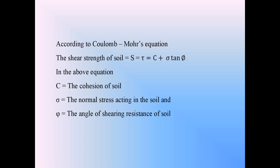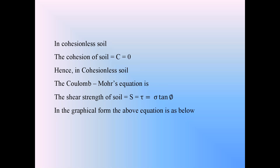That is the shear strength or shear resistance of cohesionless soil when cohesion C is zero. The Coulomb-Mohr equation for cohesionless soil is tau equals sigma tan phi. By using this equation, we can prepare a graph taking normal stress on the x-axis and shear stress on the y-axis.